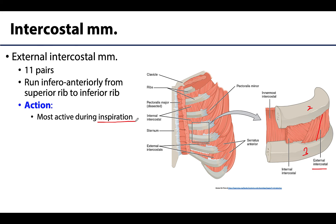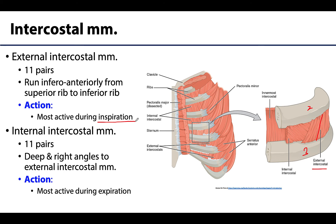It is not the primary muscle of inspiration — that will be the diaphragm — but the external intercostals assist with inspiration. The internal intercostal muscles, which you can see here, are just deep to the external intercostals. Their muscle fibers run at right angles to the external intercostal fibers. They are weaker in terms of contraction power than the external intercostals, but they play a role in expiration or exhalation.